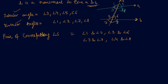Angle 1 and angle 5 are on the same side and in the same position — meaning if one is on the upper side of line A, then the other should also be on the upper side of line B. Similarly for angle 2 and angle 6, angle 3 and angle 7, and angle 4 and angle 8.